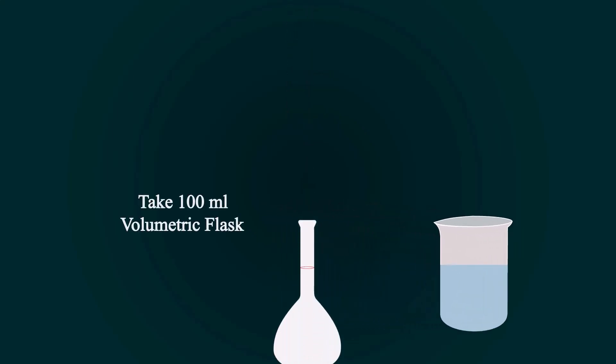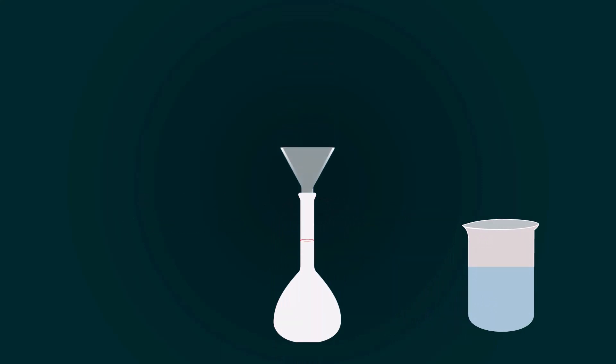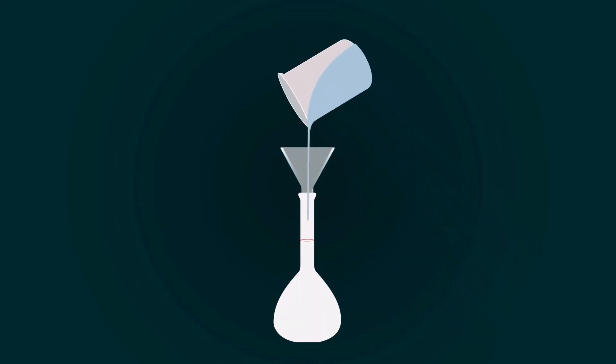Now take a volumetric flask of 100 ml and put a funnel on the top of the flask. Pour all the solution into the volumetric flask. You have to fill it up to the 100 ml mark.